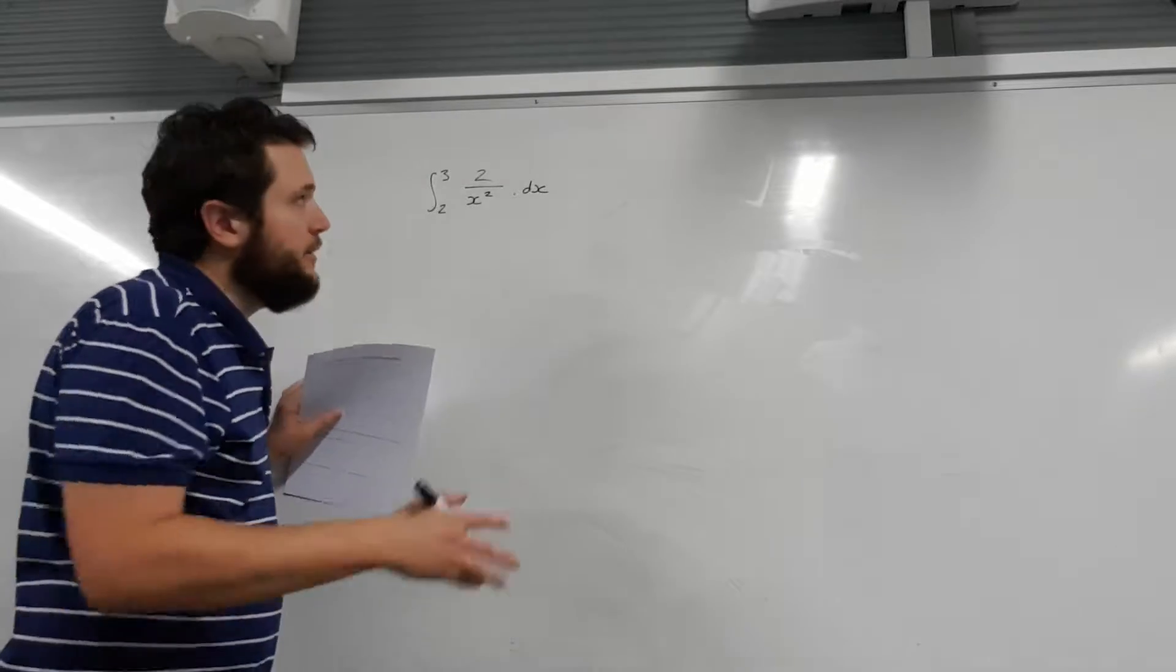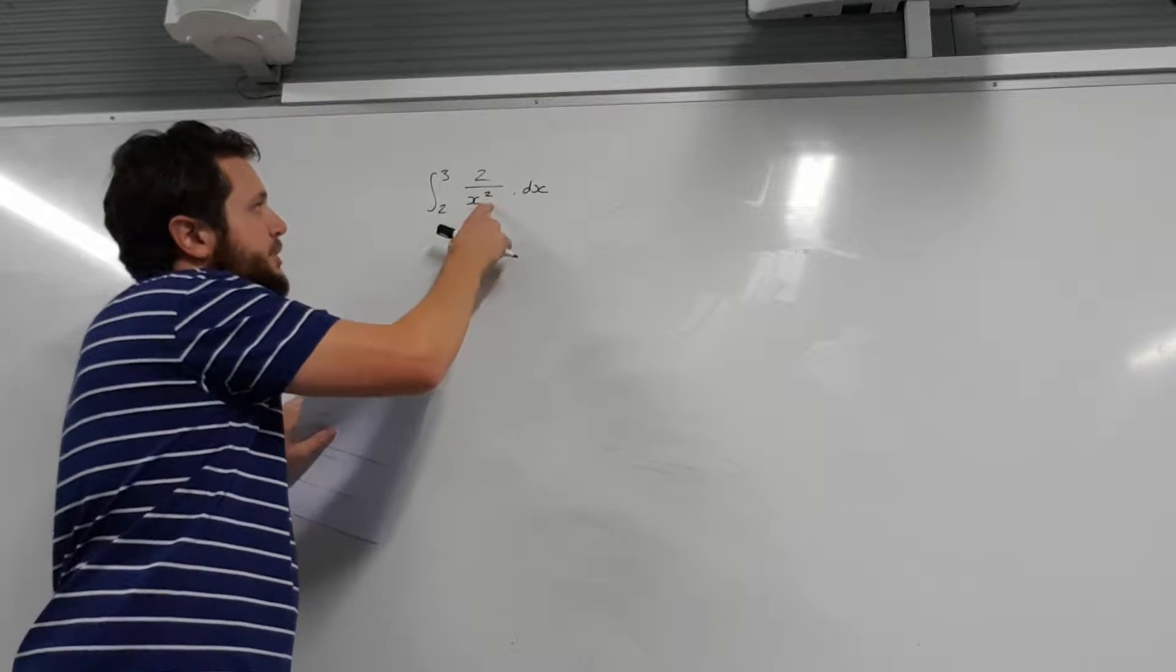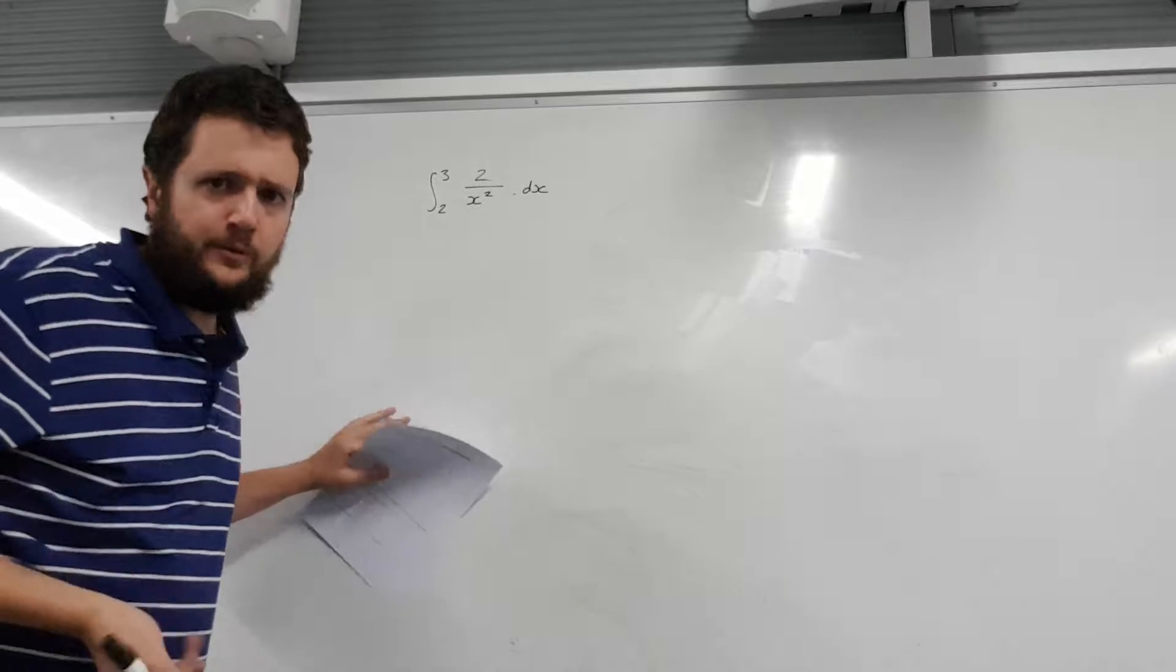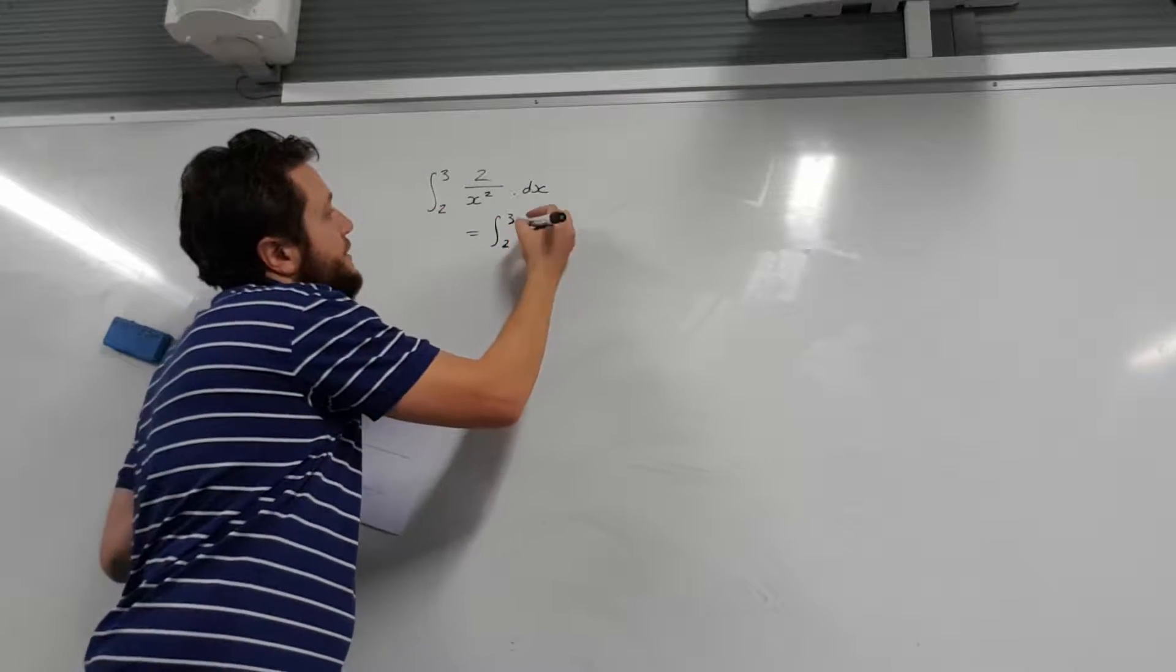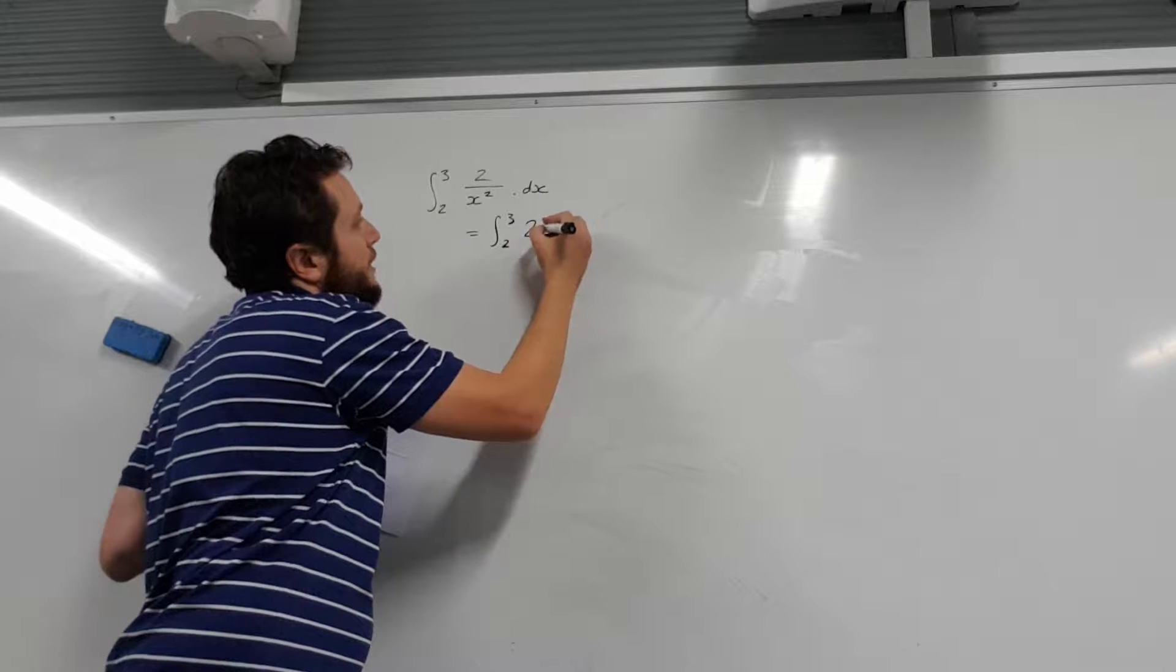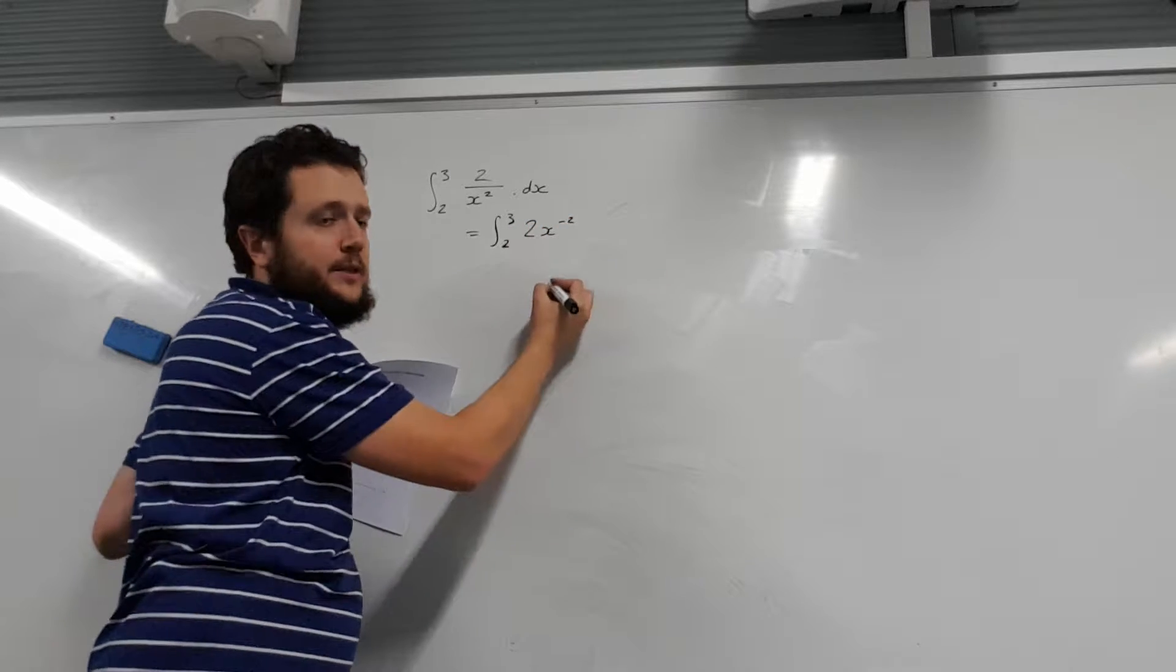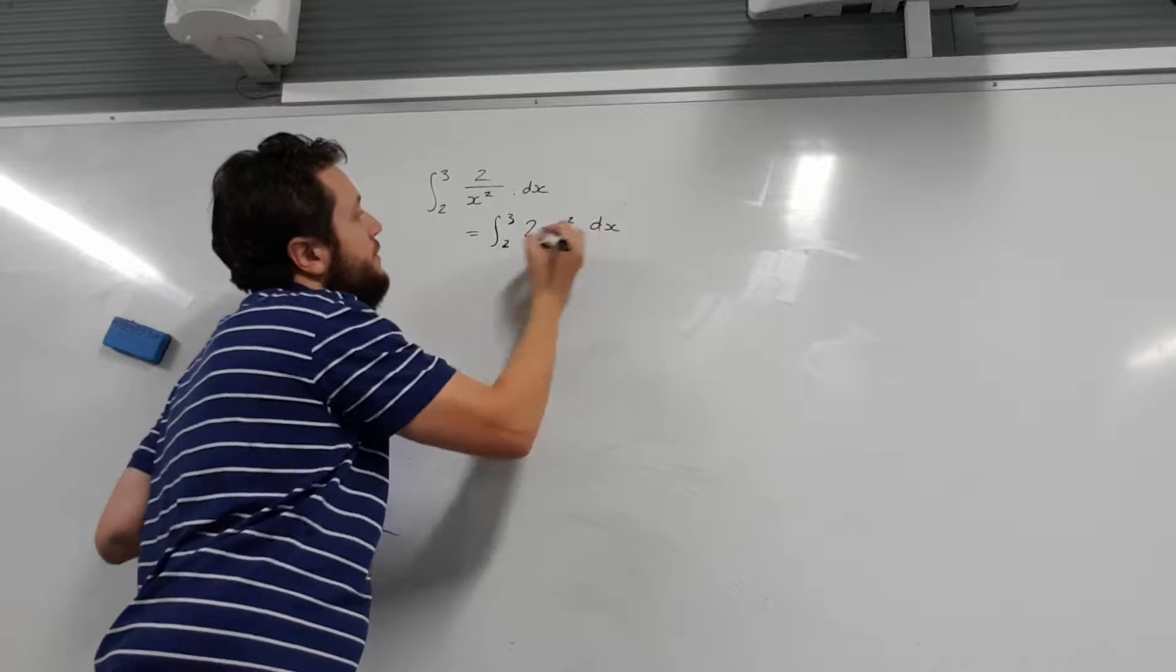So let's do this. Look, we want the actual power there. We don't want it on the bottom of a fraction. That just confuses things. So the first thing I'm going to do is make that into a power on the top of a fraction. It means it's going to be a negative power dot dx.